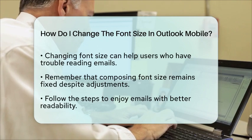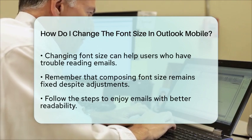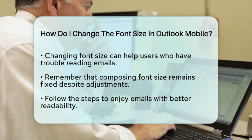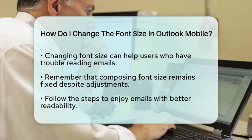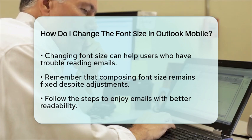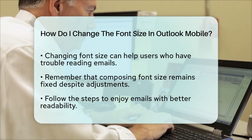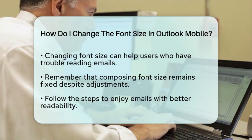In summary, adjusting the font size in Outlook Mobile is a simple process that can enhance your email reading experience. Just access the Settings, navigate to Display and Appearance, and choose your preferred font size. Enjoy your emails with improved readability.